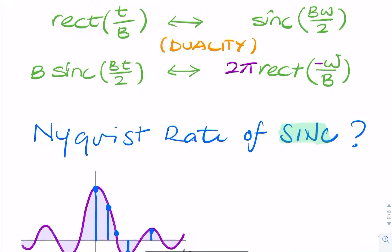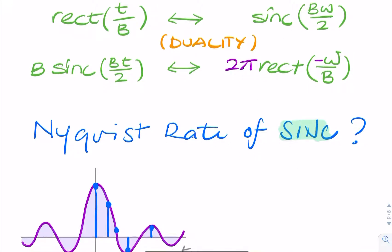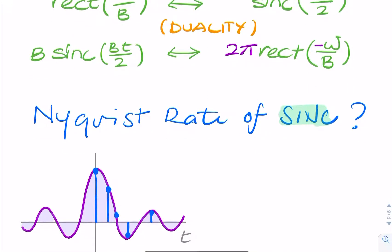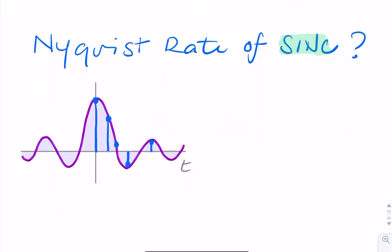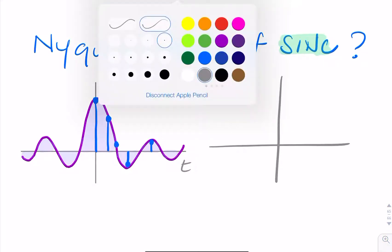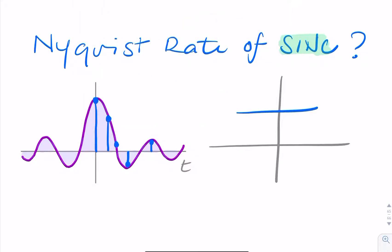So to find the Nyquist rate of a SYNC function, we need to express the SYNC function in the frequency domain. Now, we don't need to sketch, but I will add a little sketch here. The SYNC function can be expressed in the frequency domain like this.